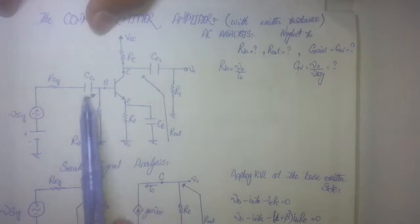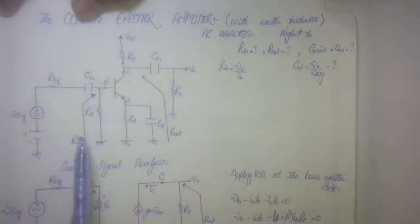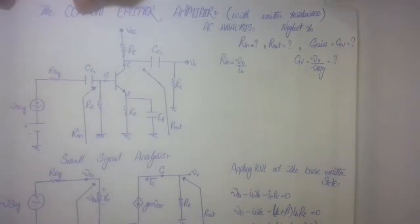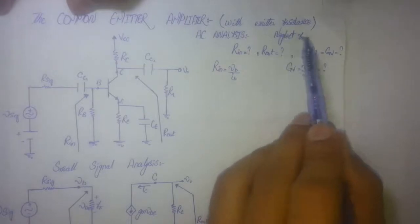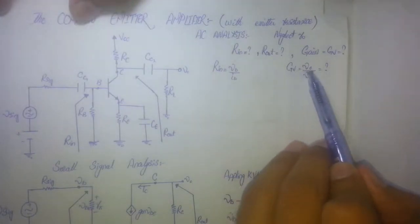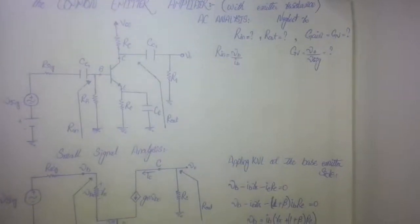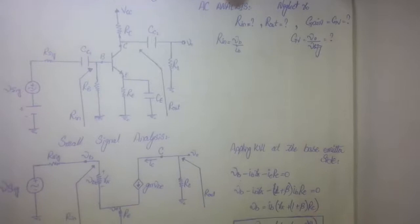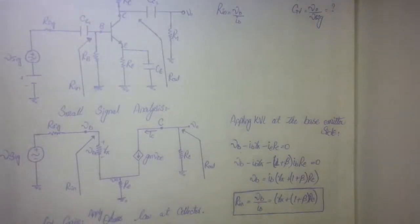In AC analysis, the two coupling capacitors are short. You already know that DC voltage sources are also short, but a current source would be open — we have no current source here, so we neglect it. We are neglecting the channel length modulation, which is the internal resistance of this BJT. We need to find the ratio of Vout by V-signal. Before I start, if you are new to my channel, please subscribe.